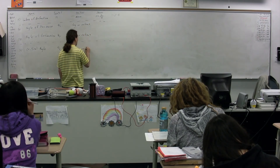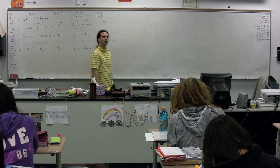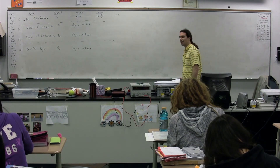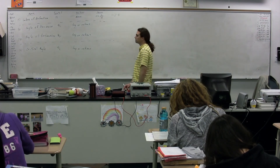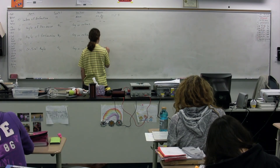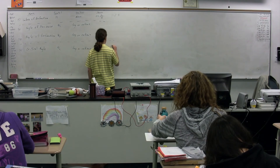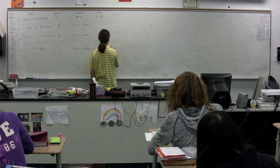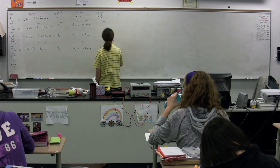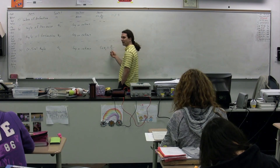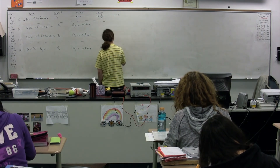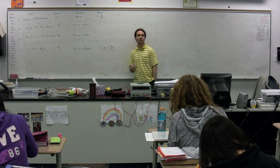We need a couple of equations here: one that encompasses both angle of refraction and angle of incidence, and one for the critical angle. The sine of the critical angle equals the refracted index of refraction over the incident index of refraction. That is the equation for the critical angle.